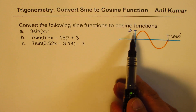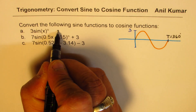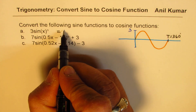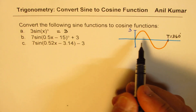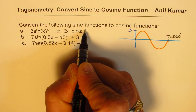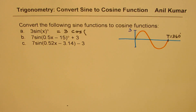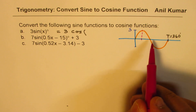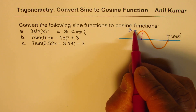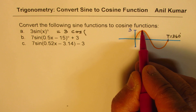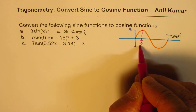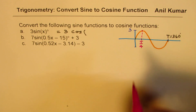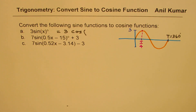Now if I have to write this equation as a cosine function, then what should it be? The amplitude is not going to change — that will remain as such. The cosine function actually starts from the maximum. So if you compare, you have actually moved this function — this cosine function is T/4 to the right. It has a movement of T/4 to the right.